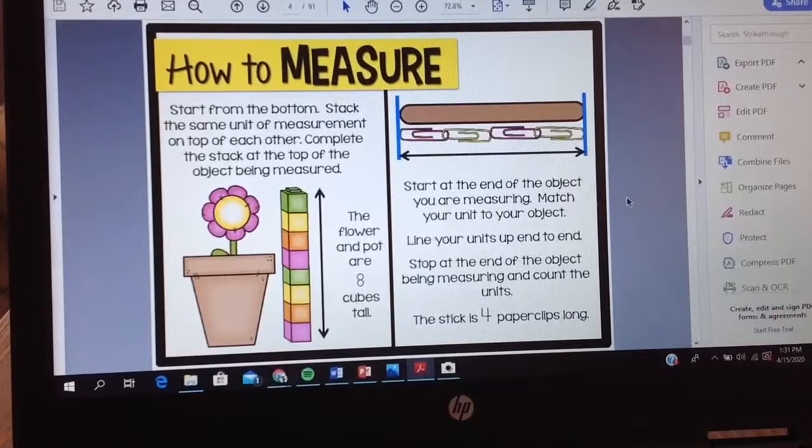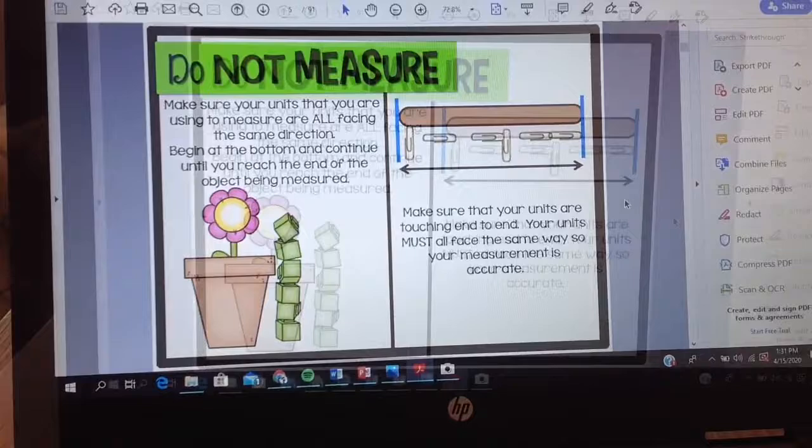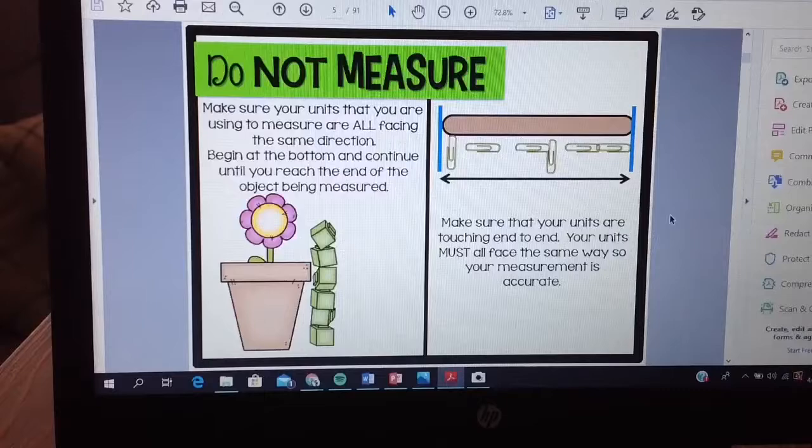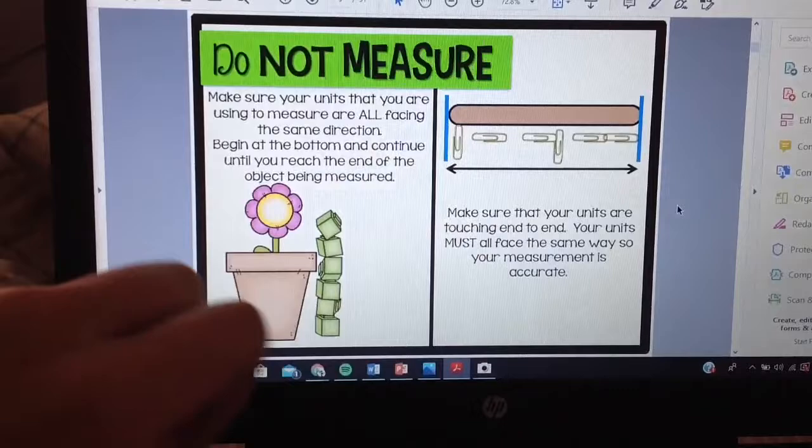But there are rules to measure, there are also rules on how you are not supposed to measure. Okay, as a mathematician it's really important to not only understand what we have to do but also understand what we shouldn't do when we're measuring. So it shows the same objects that we want to measure: a pot and a flower and then that popsicle stick. But you can already tell a big difference with how they stacked the cubes and how they lined up the paper clips.